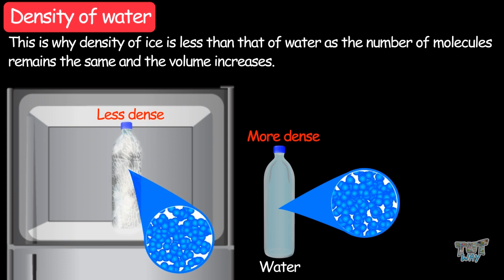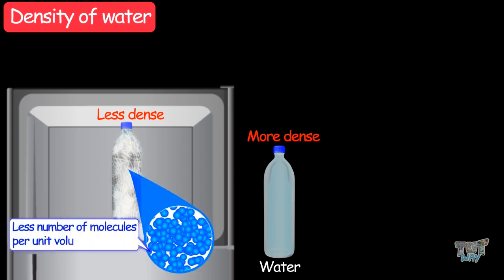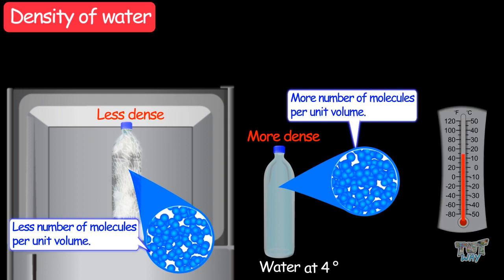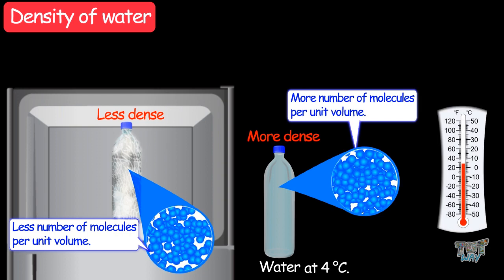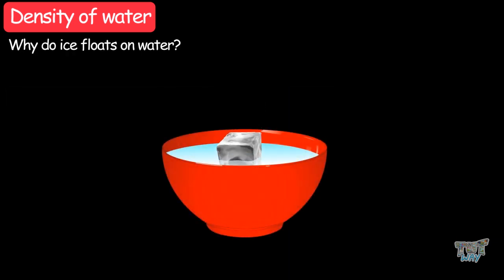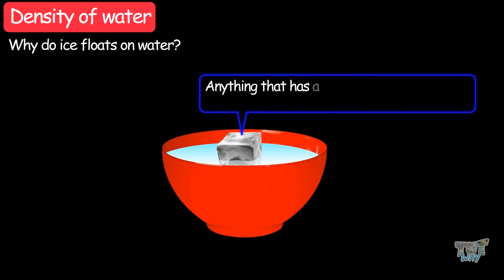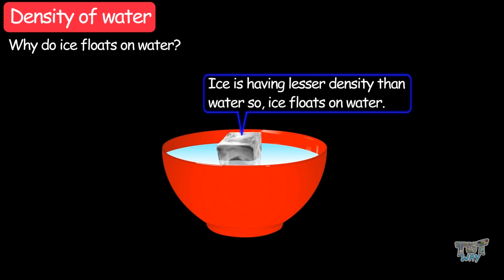So we can say that ice is less dense than water, or has fewer molecules per unit space than water at 4 degrees Celsius. This also answers why ice floats on water — anything with a lower density than water can float on water, and since ice has lower density, ice floats in water.